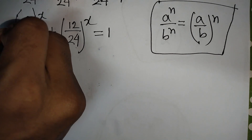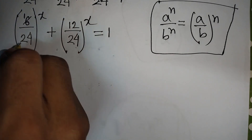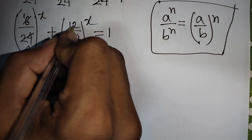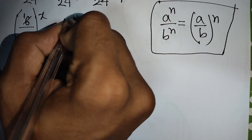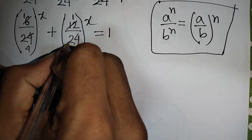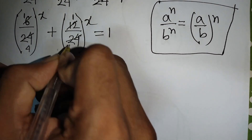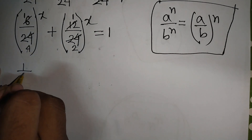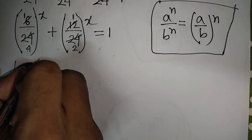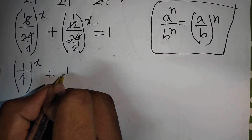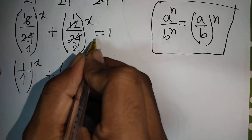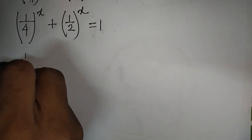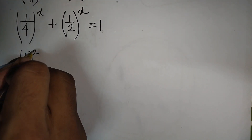Simplifying: 6 divided by 24 gives 1/4, and 12 divided by 24 gives 1/2. So we have (1/4) to the power x plus (1/2) to the power x is equal to 1.